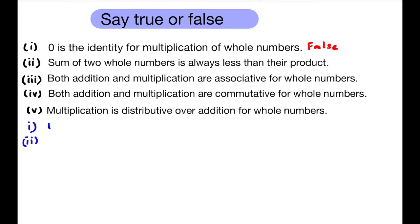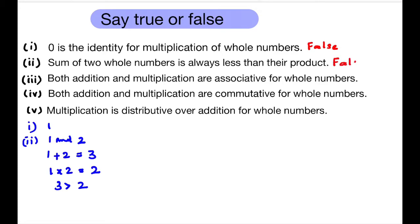Second question: The sum of two whole numbers is always less than their product. Let us take two whole numbers, 1 and 2. 1 plus 2 is 3 and 1 multiplied by 2 is 2. The sum of 1 and 2 is greater than the product of 1 and 2, so the statement is false.